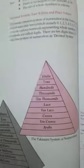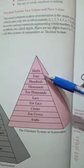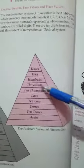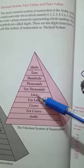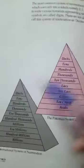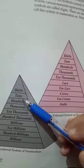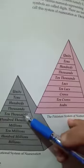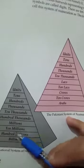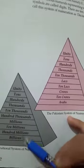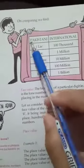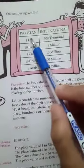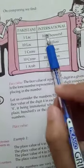You have applied this in Class 5. In this system: units, tens, hundreds, thousands, ten thousands, lakhs, ten lakhs, crores, ten crores, arab — that is the Pakistani system. In the international system: units, tens, hundreds, thousands, ten thousands, millions, ten millions, hundred millions, billions. This will be in exercise on page number 17 — tick and write star, this is important for this chapter.